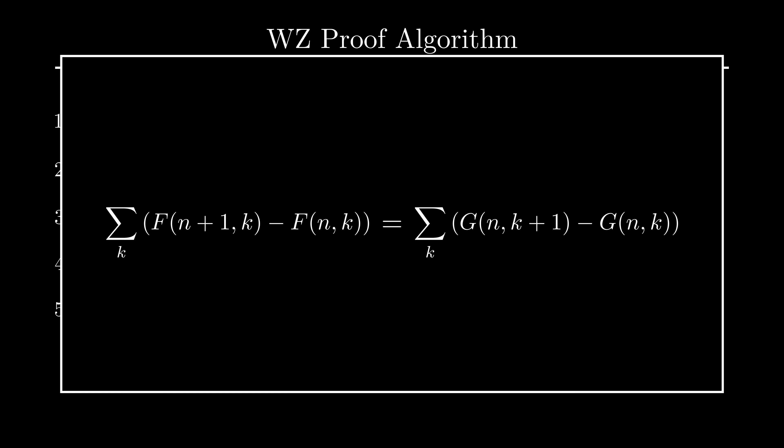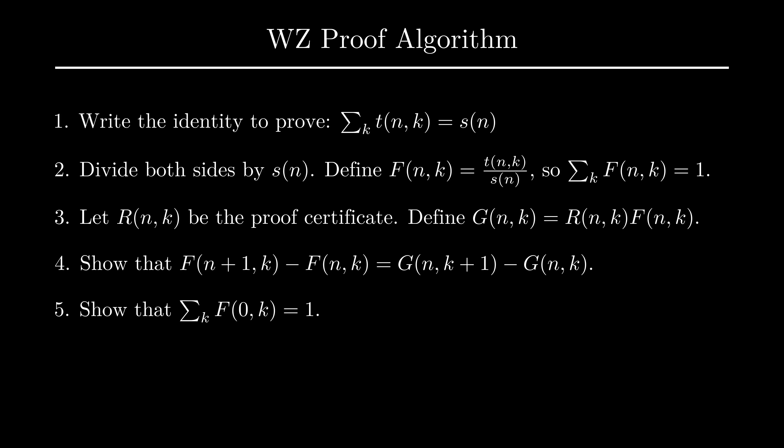We can now sum both sides of this equation over all integers k. Notice that the side with g telescopes. Since the values of g are all zero beyond some value of k, the entire sum is just zero. All we need to do now is add the sum of f on both sides to see that the sum of f(n+1) is equal to the sum of f. Think about what this means. If we can just find a single f sum, then for any larger n value, the sum will be unchanged. This is simply the inductive step for step 5, which provides the base step. Once we show that plugging n equals 0 gives us 1, this guarantees that no matter what n is, the sum will always be a constant, and that constant is 1.